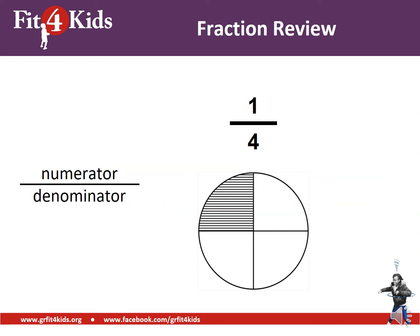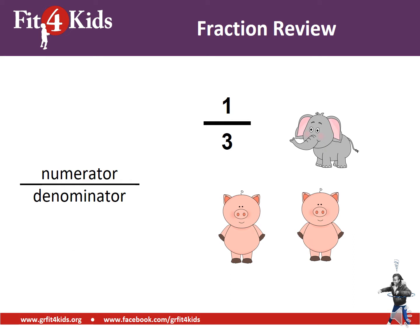First, we'll have a fraction review. Our top number is our numerator. The bottom number is the denominator. The numerator stands for the part; the denominator is the amount that the whole is cut into. For example, we have one part shaded out of four parts total, which is one-fourth shaded. In this next example, we have one elephant and two pigs, so one-third of the group are elephants — one elephant out of three total animals.